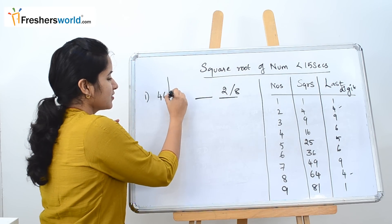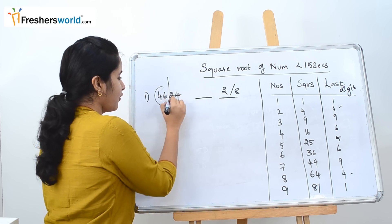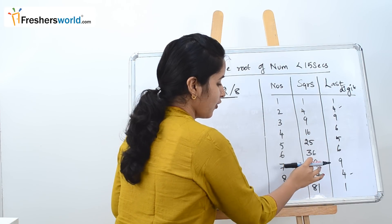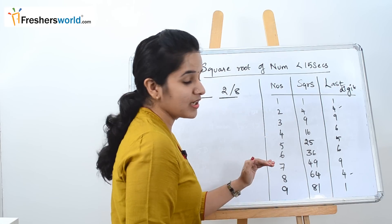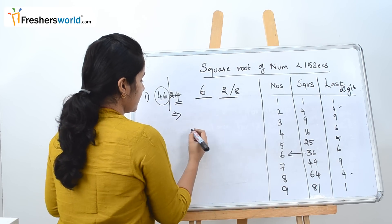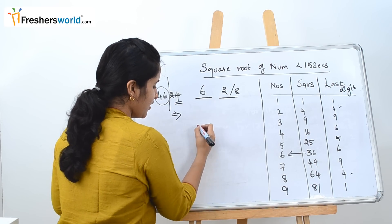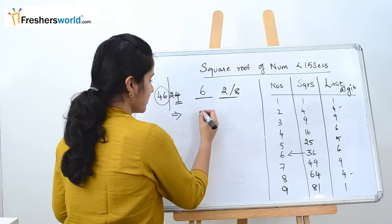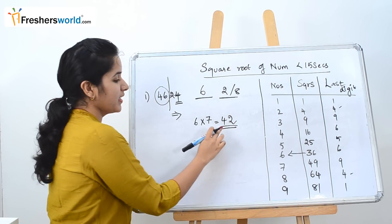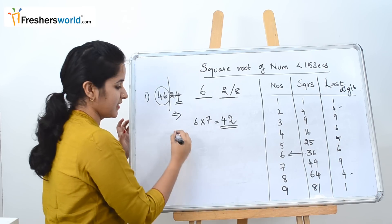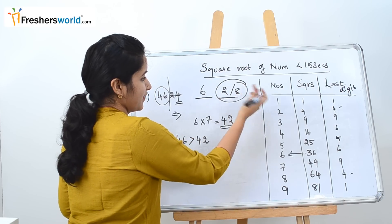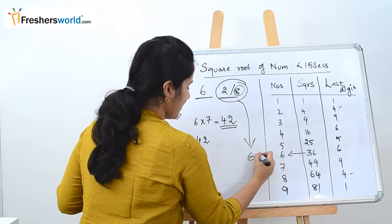Next, ignore the last 2 digits and take the first two digits, which is 46. See where 46 falls between the squares — it falls between 36 and 49. Take the lower value, whose square root is 6. Then multiply 6 by its next number 7, which gives 42. Since 46 is greater than 42, you take the larger number, which is 8. So the square root is 68.